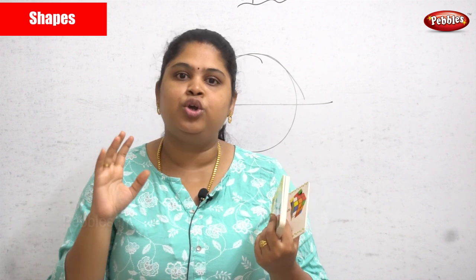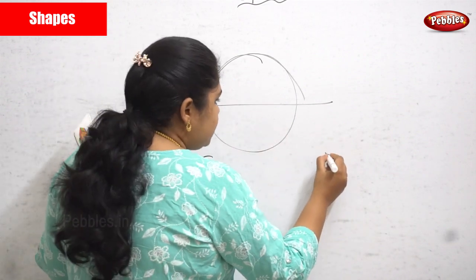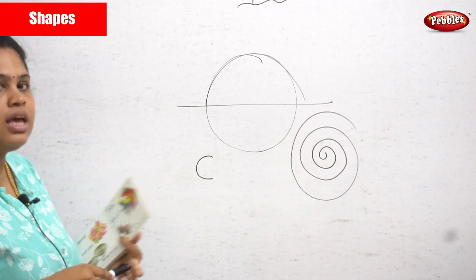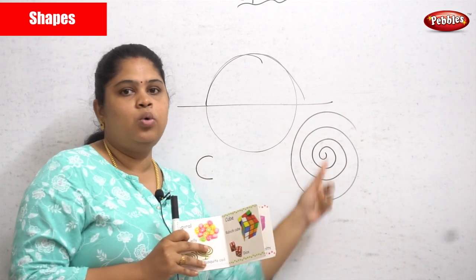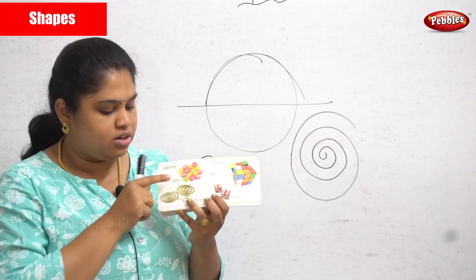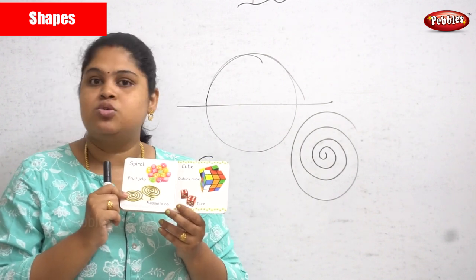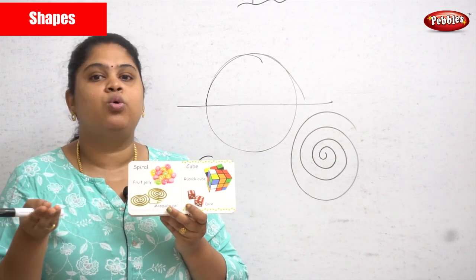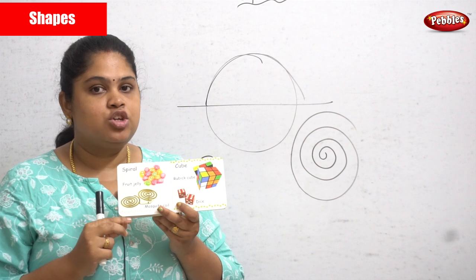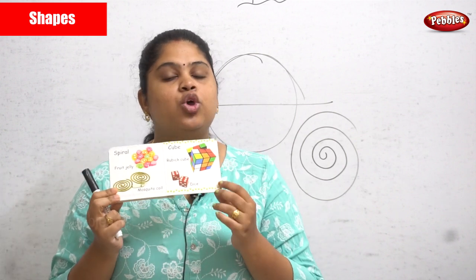Next is a new shape — the spiral. A spiral looks like a circle but it is not a perfect circle; it goes from inner to outer. Examples: fruit jellies are in a spiral shape, a mosquito coil is a great example of a spiral, and spiral binding on photo albums is also an example of a spiral.